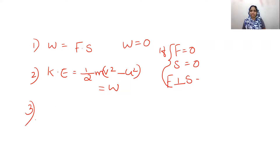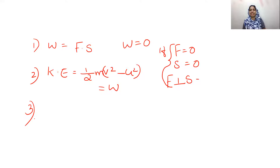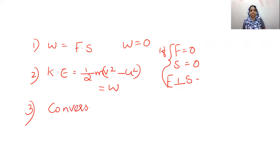Looking at the law of conservation of energy: energy can neither be created nor be destroyed. Energy conversions are possible. For example, when we switch on a light, electrical energy is being converted into light energy. That is how one form of energy is converted into another.